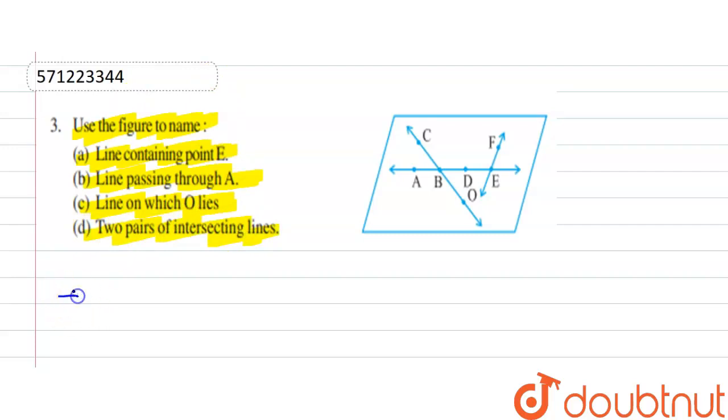So our first part is line containing point E, that is AE and BE. So AE and BE.